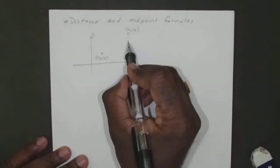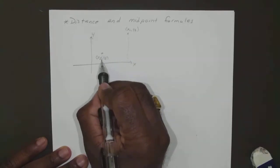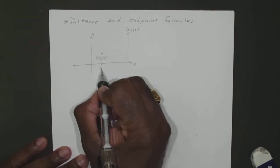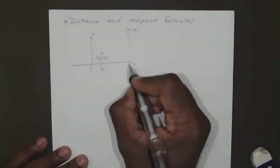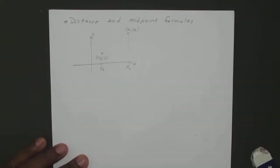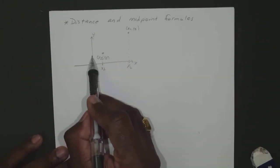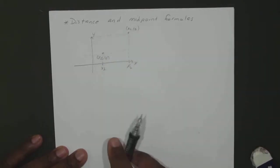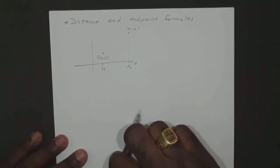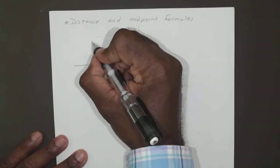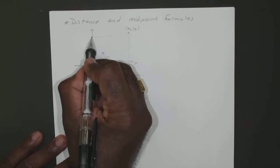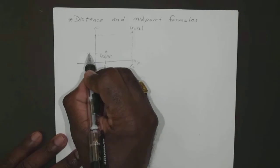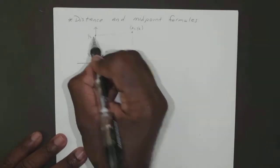So we look here, we draw our imaginary line straight down. We know on our x-axis this is our x1, and on our x-axis here this would be our x2. So if we drew another imaginary line across the y-axis, we know this would have to be our y1, and this would have to be our y2.